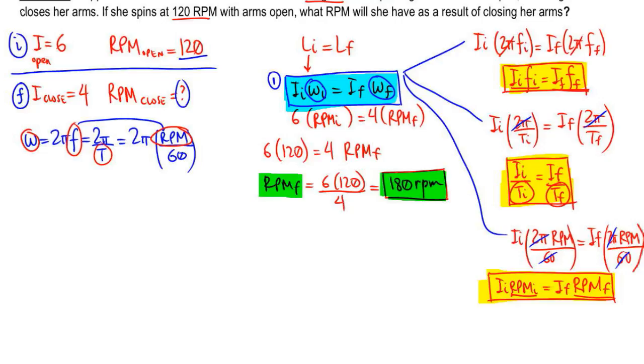The last point I want to make is, notice that our I went from 6 to 4. It changed by a factor of 1.5. It went down by a factor of 1.5. And then the RPM went from 120 to 180. It went up by a factor of 1.5. And that's because conservation of angular momentum is a linear relationship. There's no squares or whatever. So if one goes down by 1.5, the other one has to go up by 1.5.